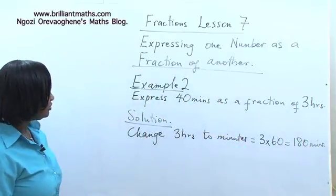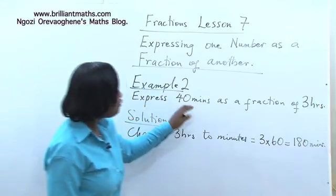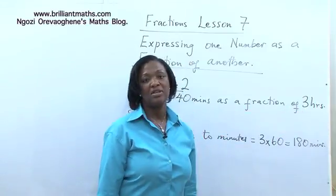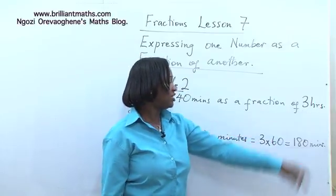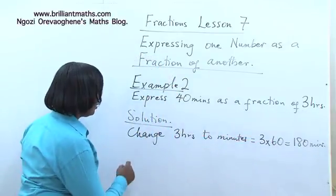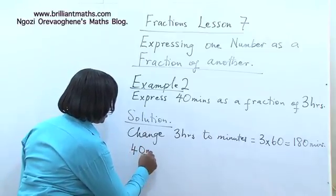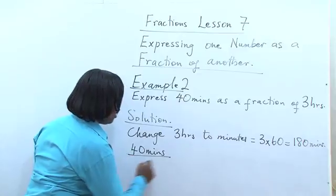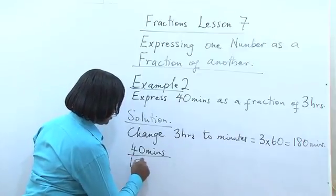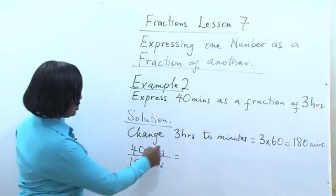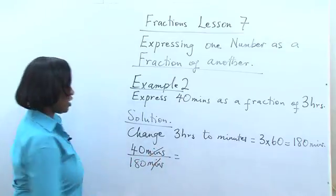Next, we want to express 40 as a fraction of 3 hours. So the denominator is 3 hours, which is now 180 minutes. So we have 40 minutes over 180 minutes, the minutes will cancel out.